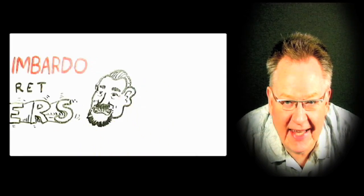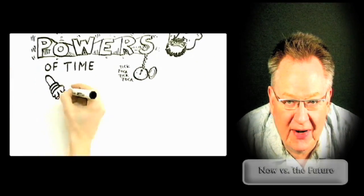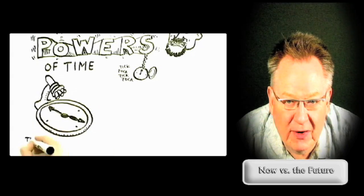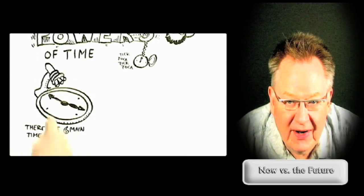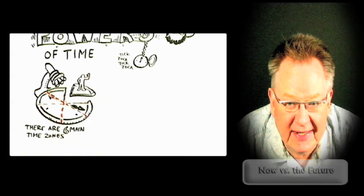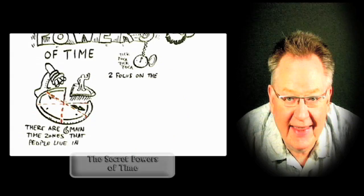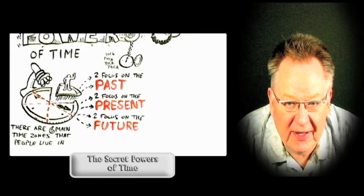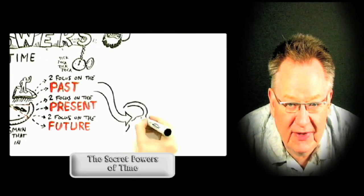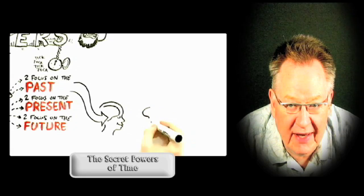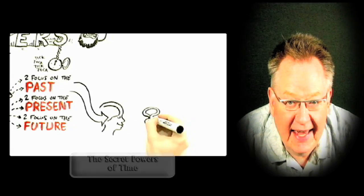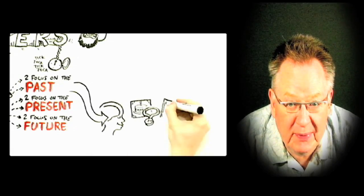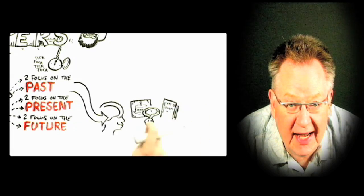We talked about his work last year — I'll put up a link to that entry which I called 'Now vs. the Future.' The video we're looking at here also comes from a Philip Zimbardo presentation called 'The Secret Powers of Time.' I'll put up a link here and invite you to view this thought-provoking video in its entirety. In it, he suggests that there are six possible ways for people to interface with time.